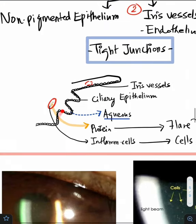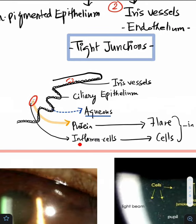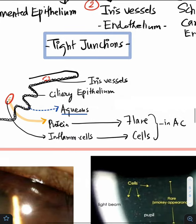So any breach in this blood aqueous barrier causes leakage of proteins and inflammatory cells into the clear aqueous. This protein forms the flare, and the inflammatory cells form the cells in the anterior chamber.